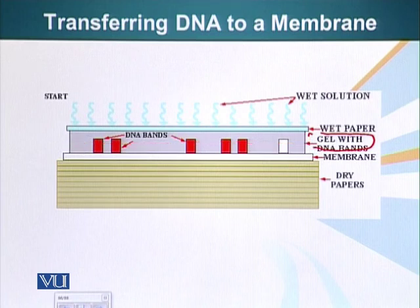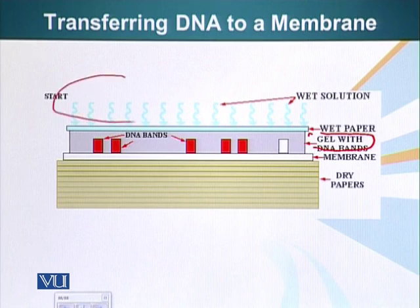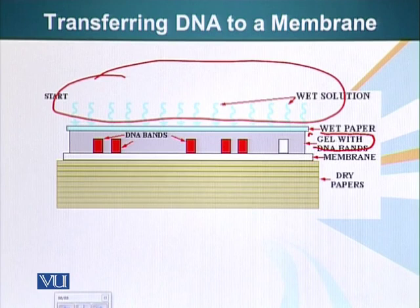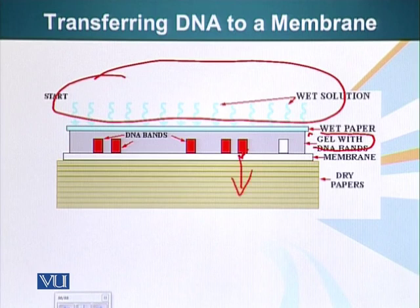Here we have placed our gel on dry paper towels, with liquid buffer on top. When we start this procedure, the water will move towards the drier papers, and when it does that, the DNA — which is floating on the gel — will also move towards the membrane and get stuck, because the pores of the membrane do not allow DNA to diffuse through it and into the dry paper towels.